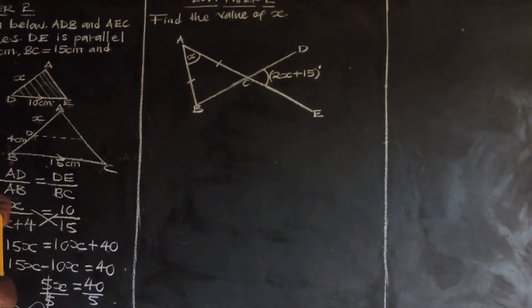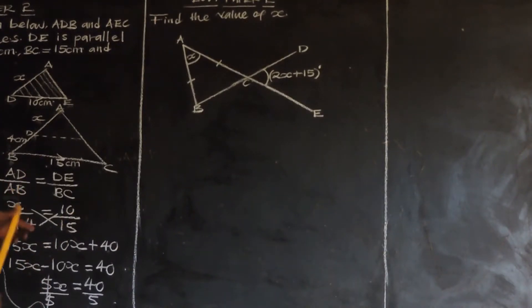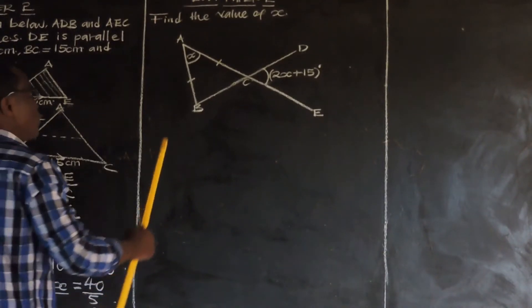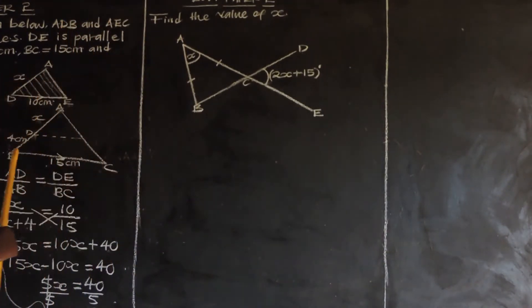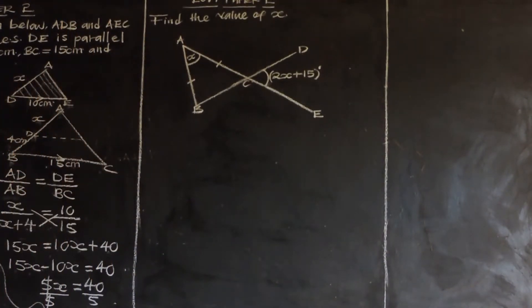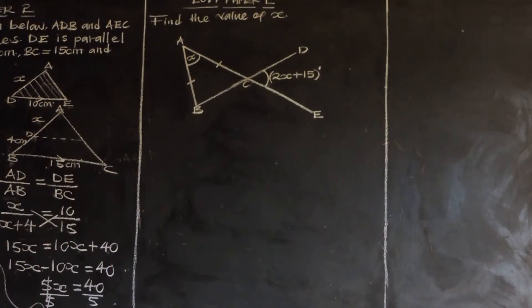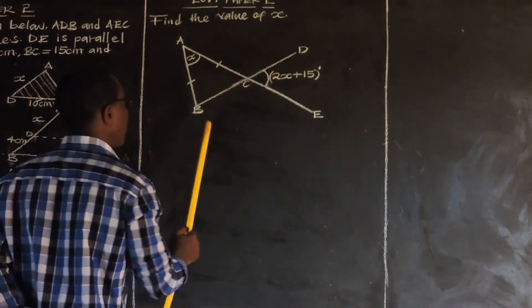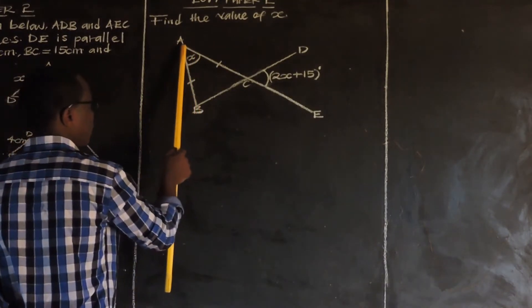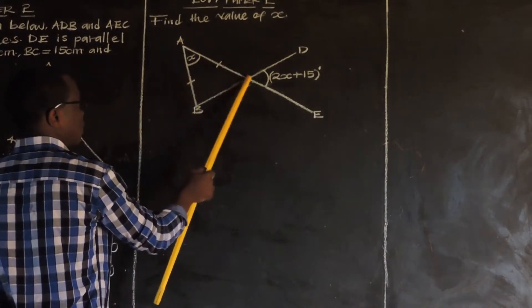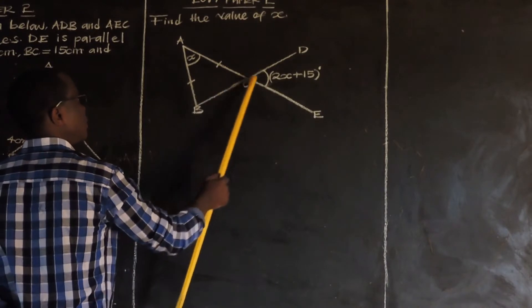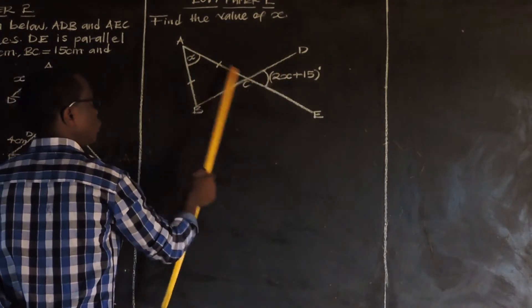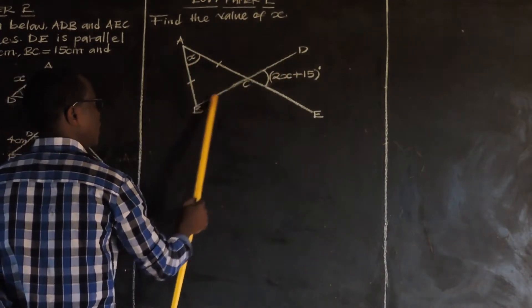We have been taught to find the value of X. Now we have been given a triangle where A, C, E and B, C, D are straight lines.